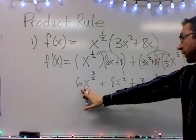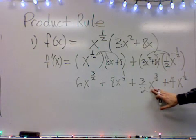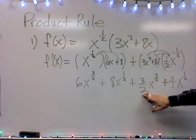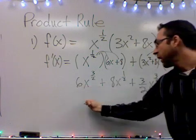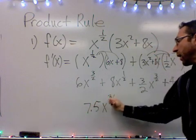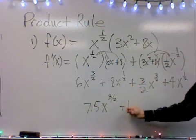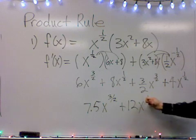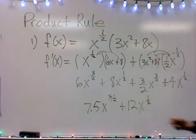So we've got 6x to the 3/2 here and we've got 3/2 x to the 3/2 here, so that counts as 1 and a half x's. So you could just combine those to say 7 and a half x's to the 3/2 power, and then you've got two like terms here, 12x to the 1/2. All right, that's the first example using the product rule to get the derivative.